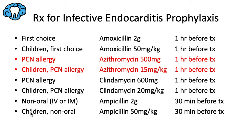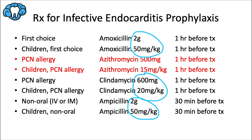Ampicillin is an option for someone who cannot take oral medication — delivered intravascularly or intramuscularly, 2 grams 30 minutes before treatment; children: 50 mg/kg. A shortcut for pediatric dosing: divide the adult dose by 30 or 40. For example, 2000 mg divided by 40 gives 50 mg/kg for amoxicillin and ampicillin. For clindamycin, 600 mg divided by 30 gives 20 mg/kg. For azithromycin, divide by approximately 33 to get 15 mg/kg.